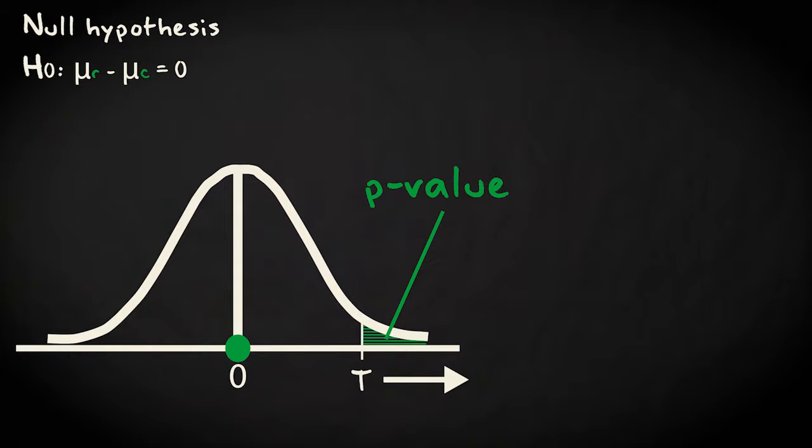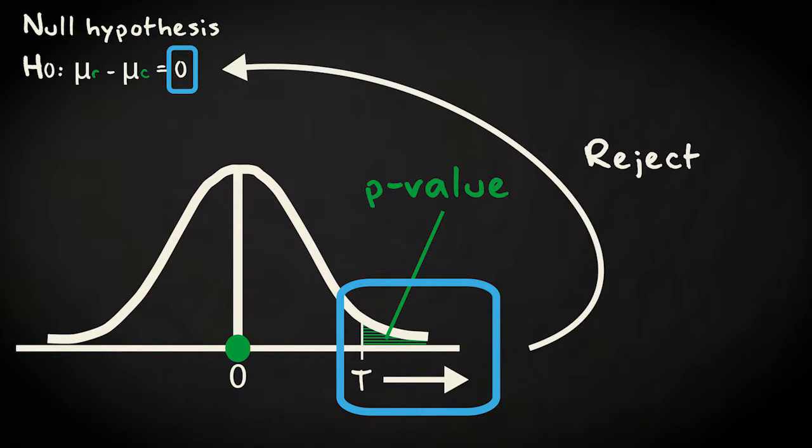Our null hypothesis states that the difference in mean health rating between the raw meat and canned group is 0. We hope that our sample produces a test statistic that is very unlikely, with a very small p-value, so we can reject the null hypothesis.